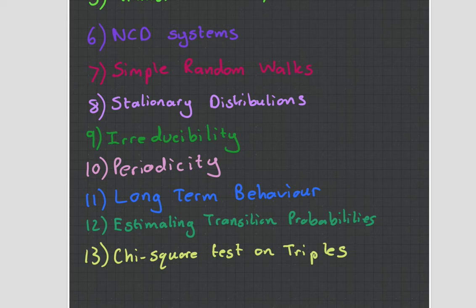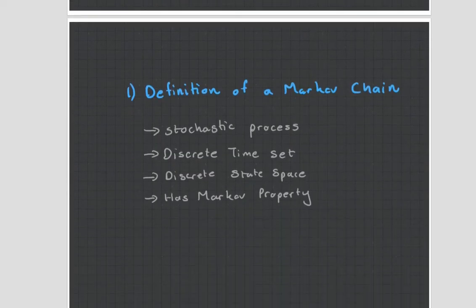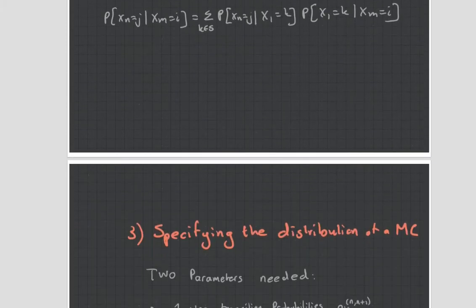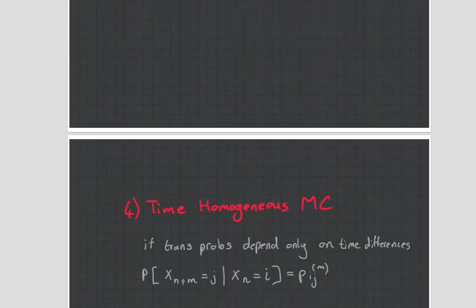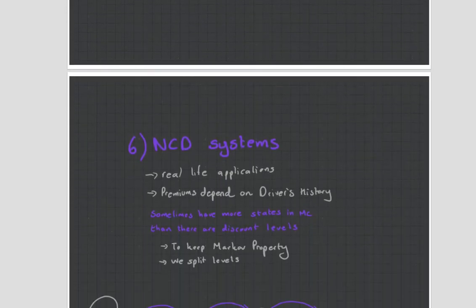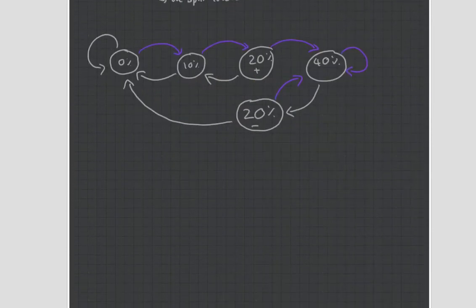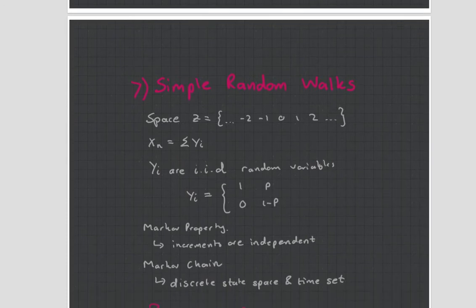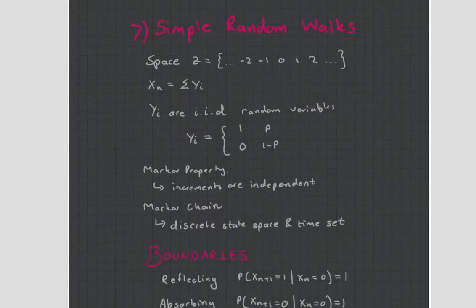Be sure to check out the very first video where we spoke about Markov chains, transitional probabilities, their distributions, time homogeneous, transitional matrix, and the no-claim-discount systems. So check out that video, and let's get on to simple random walks.